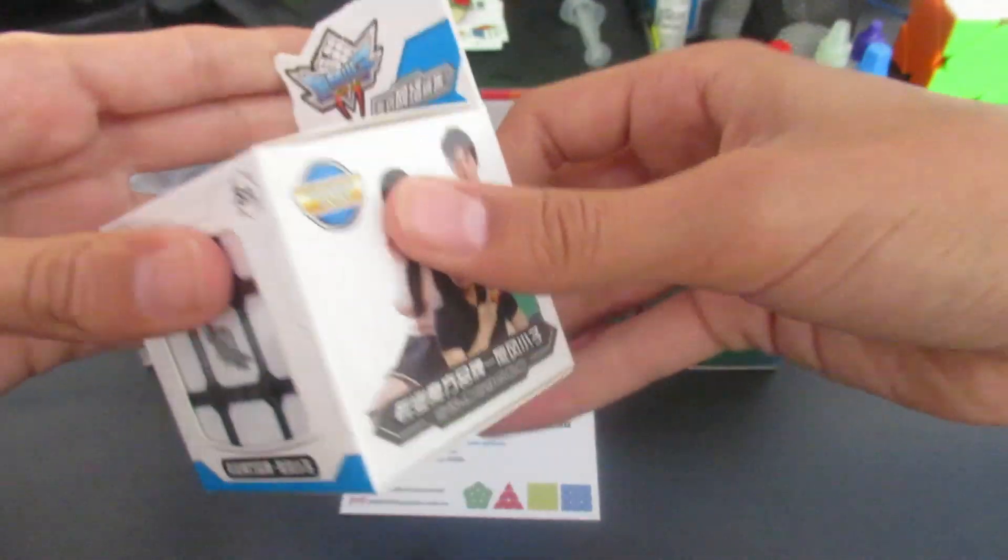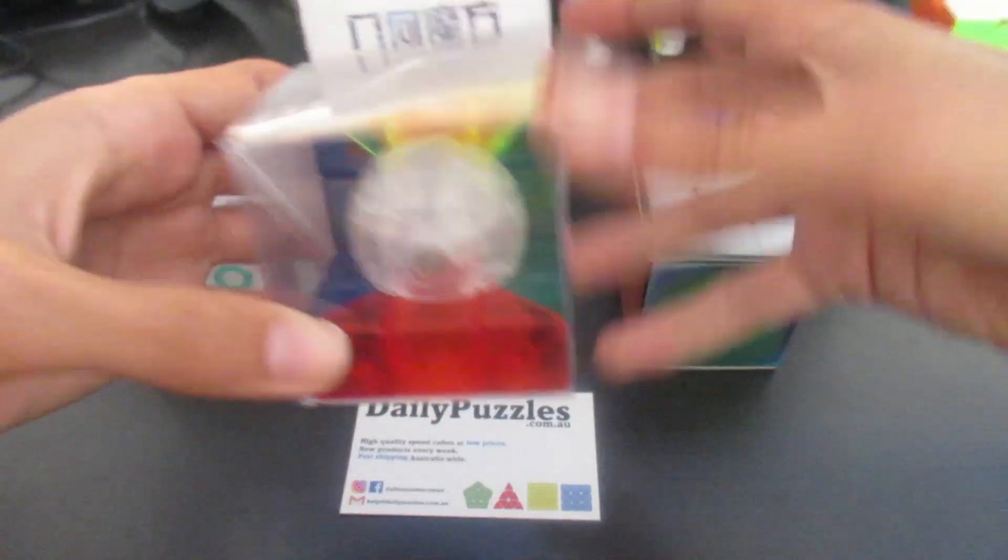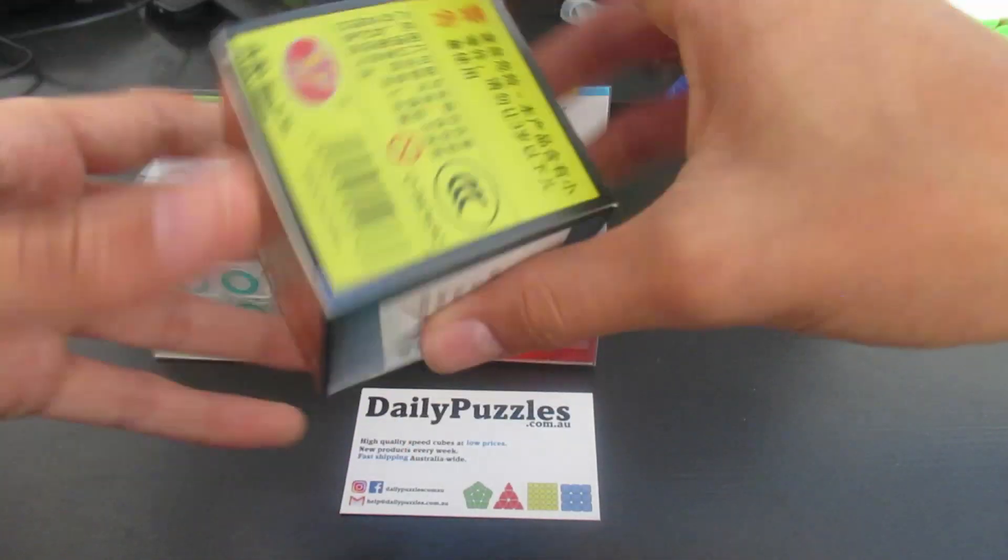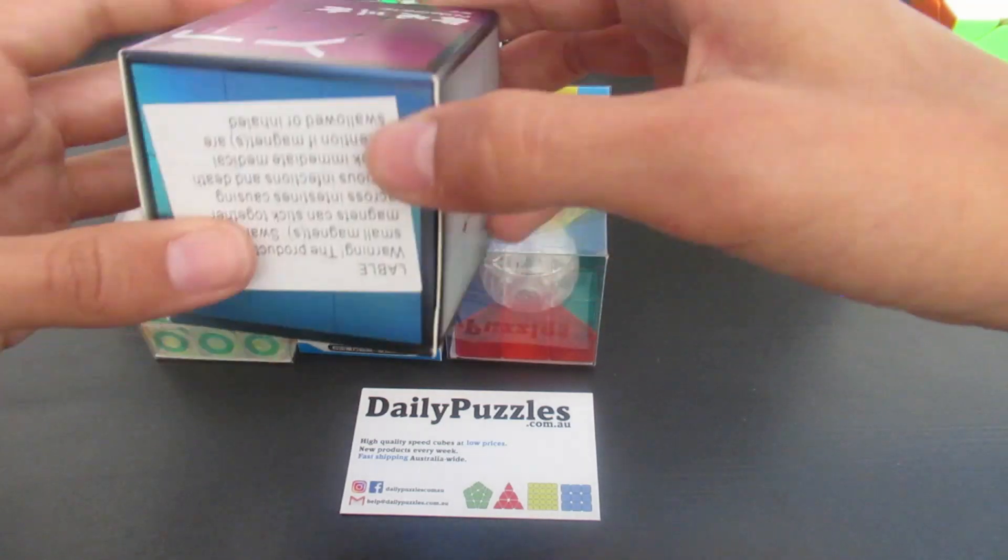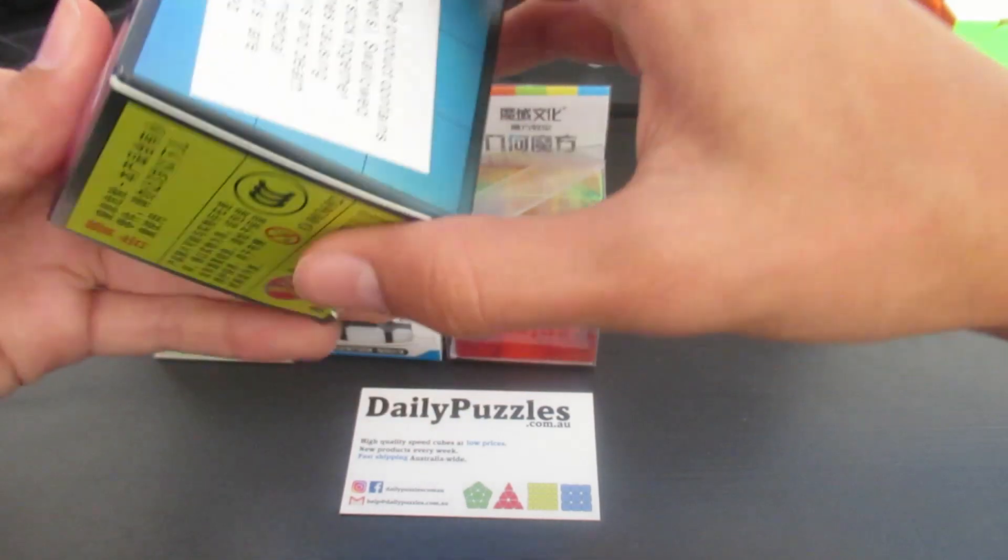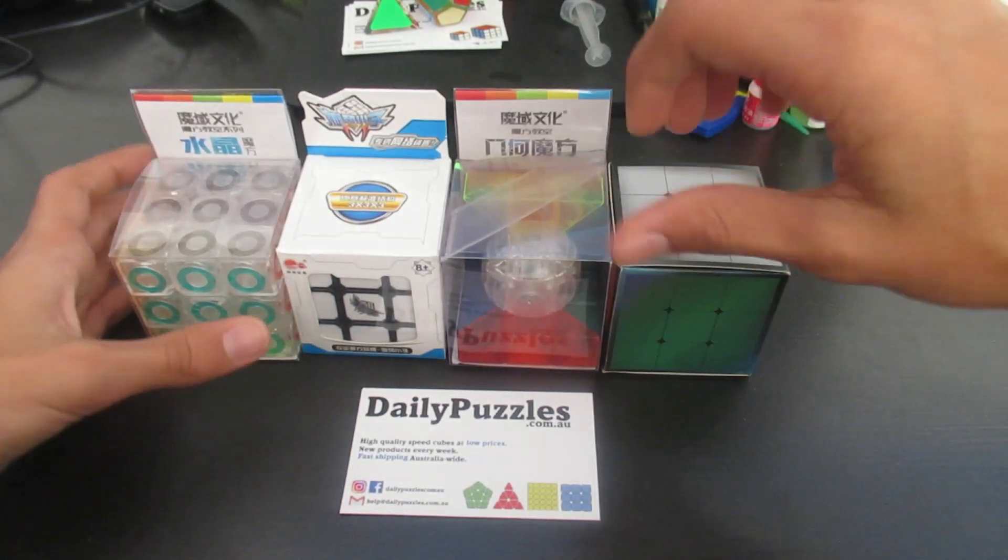Okay, so as you can see we have a good variety of some cubes. We've got an interesting sort of sticker 3x3. We have what looks like to be a Cyclone Boys 3x3. We have this interesting cube which I have no idea what it is. And we have this interesting packaging which seems to be a YJ cube. It says 2 and it says magnetic so it could be a YJ Yulong version 2, I'm not sure. But without further ado, let's get onto it.